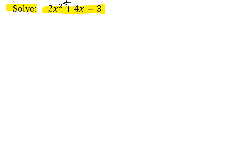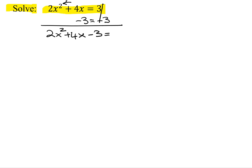So the first thing I'm going to have to do in this problem is subtract 3 from both sides. So I get 2x squared plus 4x minus 3 equals 0. Whether I'm going to factor this equation or use the quadratic formula, I want to compare it to ax squared plus bx plus c equals 0.